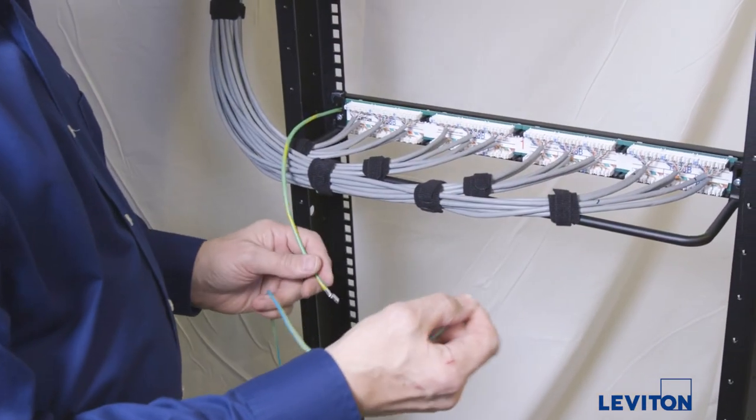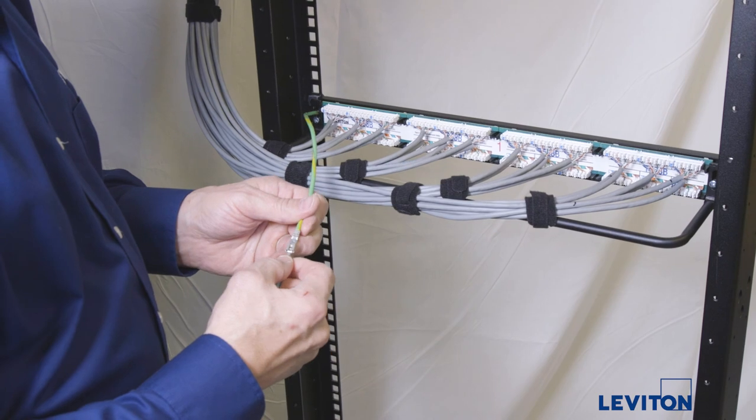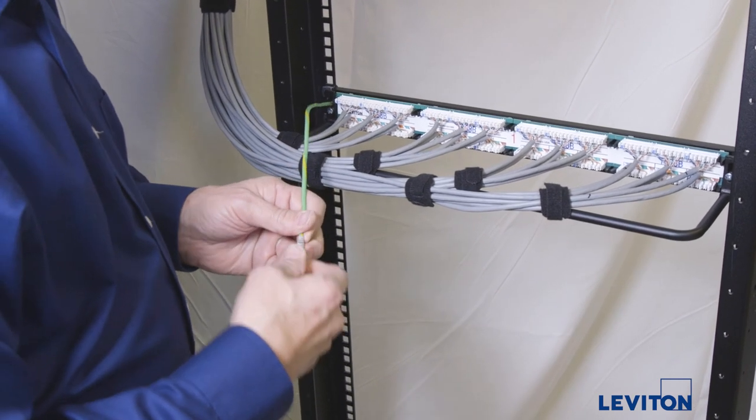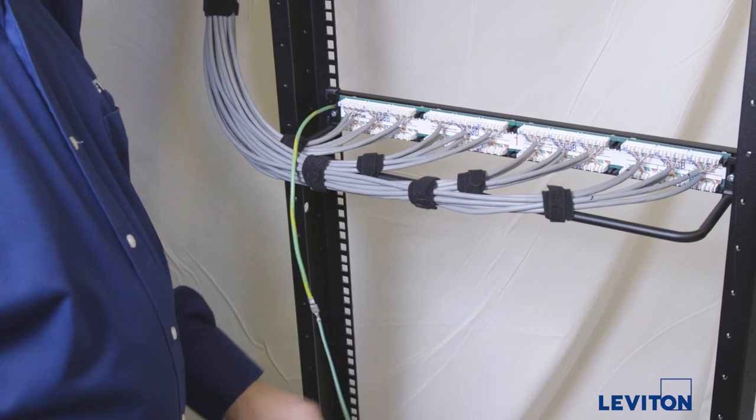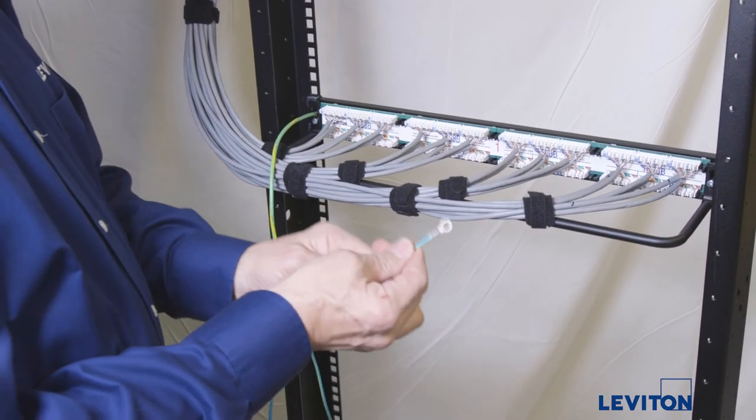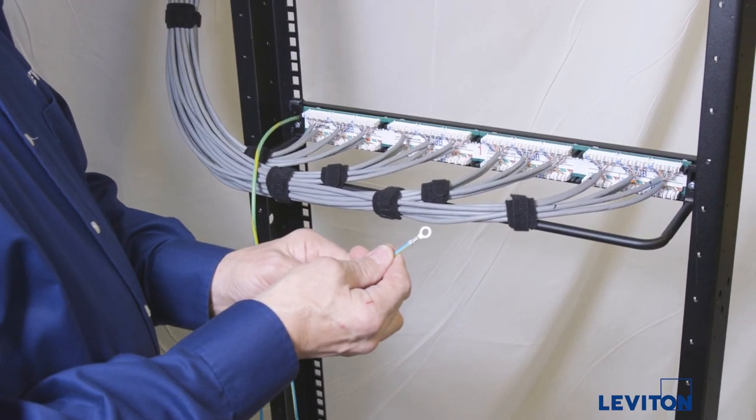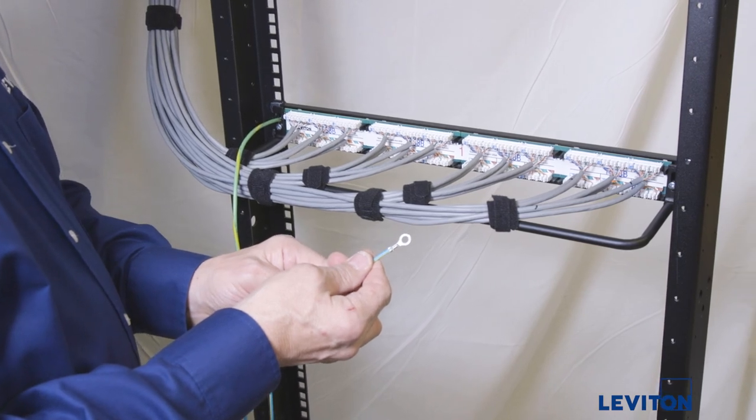Attach the spade lug to one end of your grounding wire and the ring terminal to the other. Connect the spade lug to the spade at the end of the panel grounding lead. Attach the ring terminal to the bus bar or grounding element. The grounding is now complete.